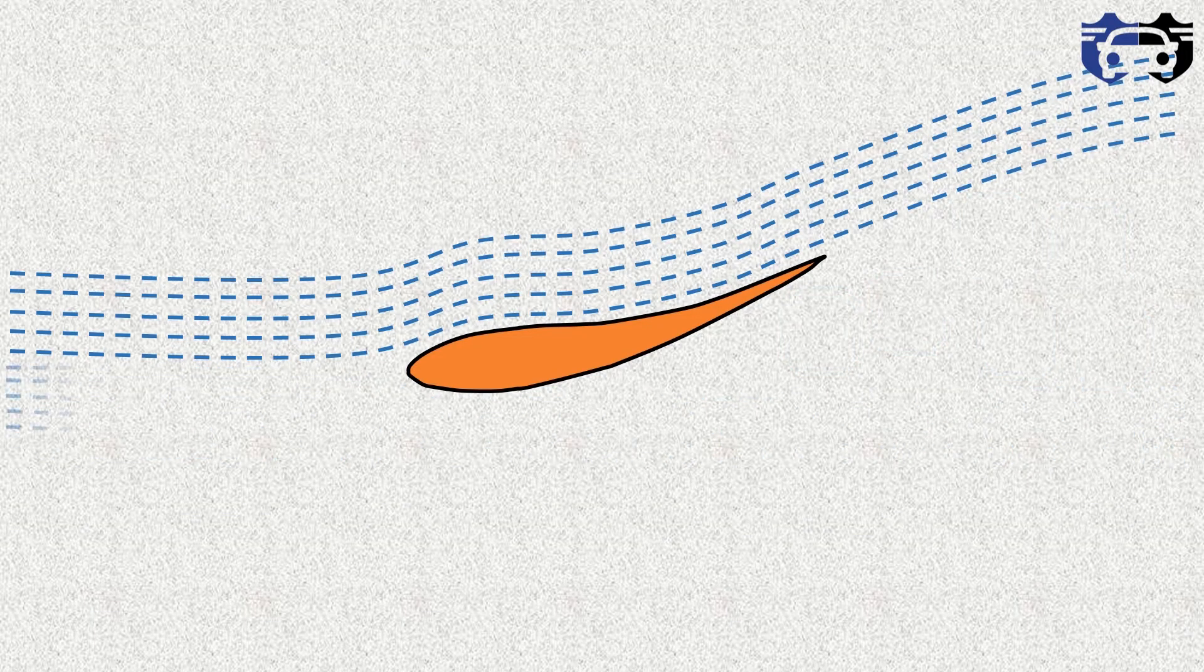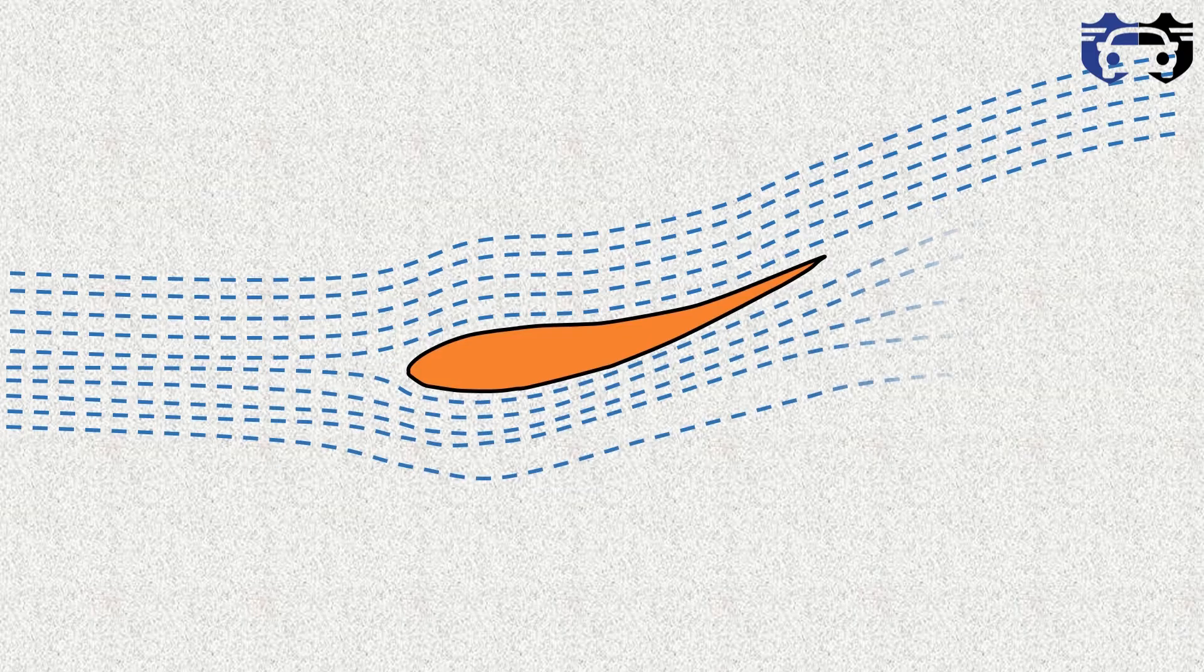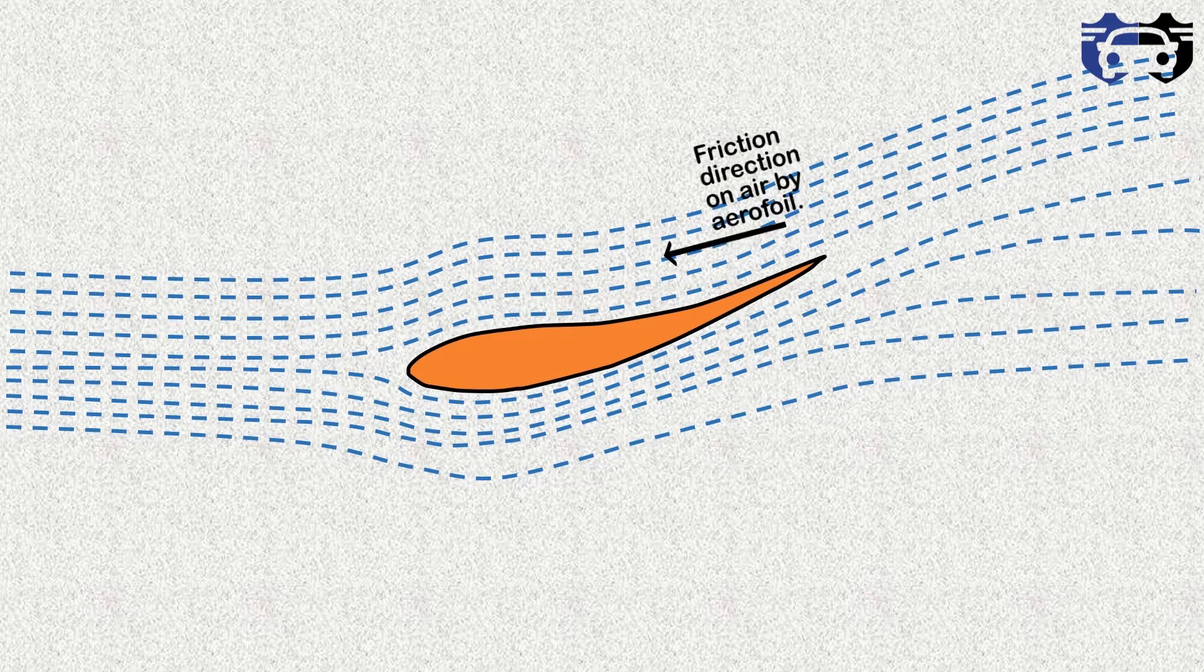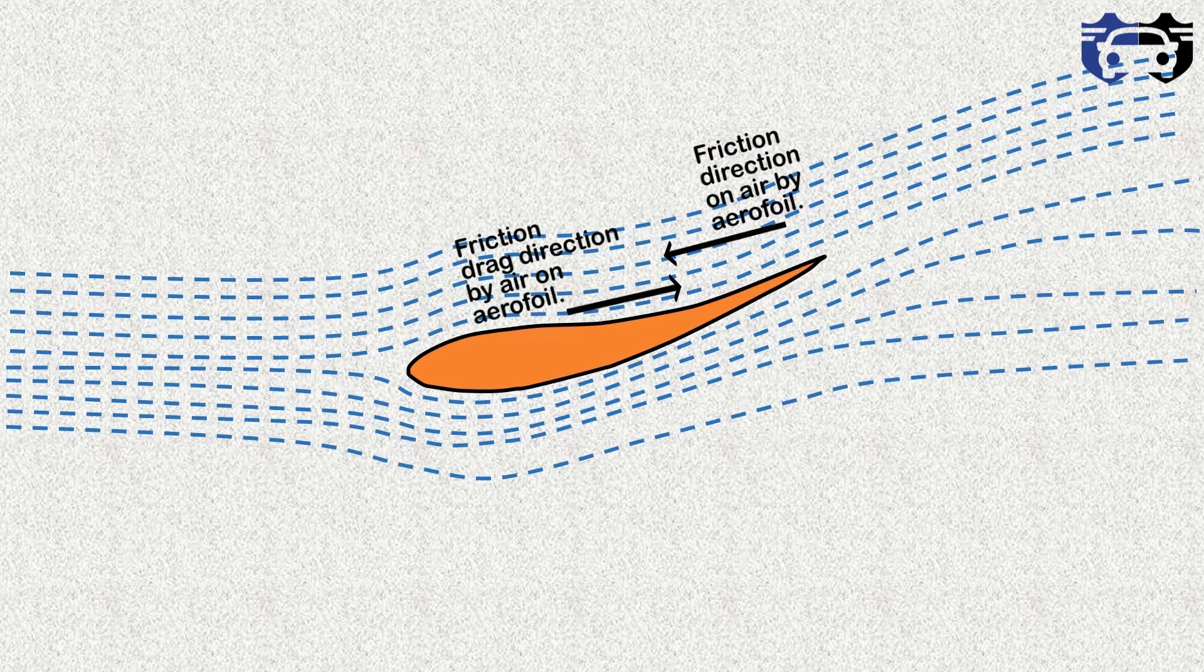That's why the streamlines of air get attached at the bottom and generate a downforce. Along with the downforce, drag is also produced because of Newton's third law. You are pushing the air, you are slowing the air at the rear, so the air will also push you and resist your motion. This resisting by the air is called drag.